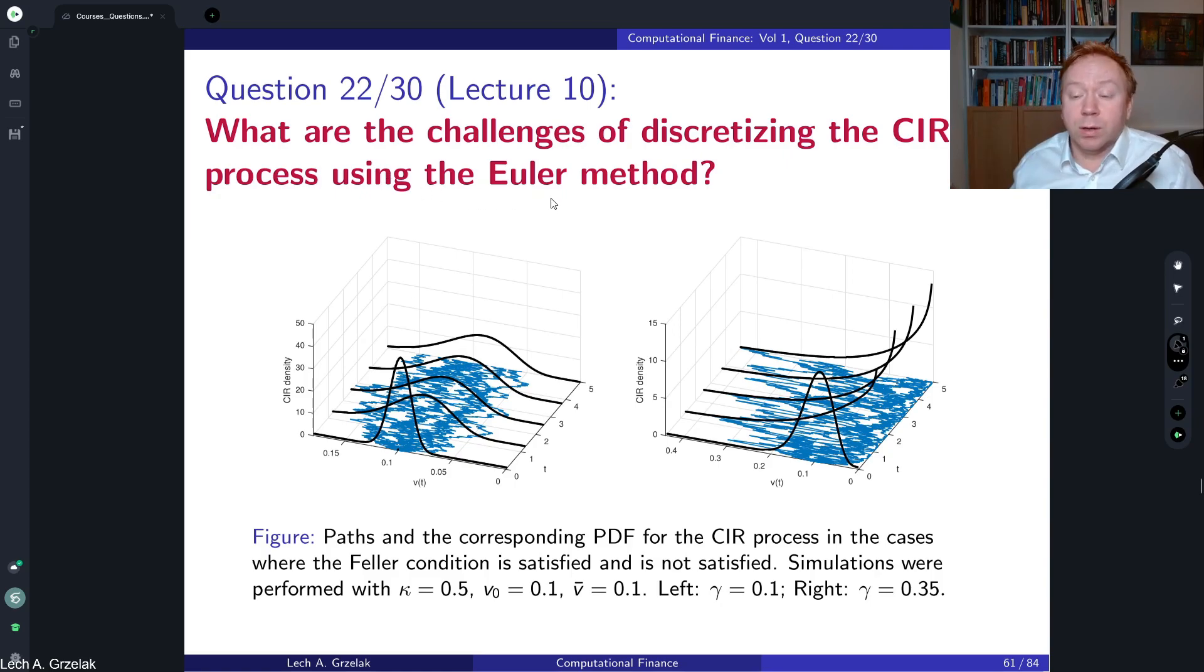For your information, in practice once you calibrate the Heston model, this is typically the case. The Feller condition is hardly ever satisfied. In literature you can see people apply the Heston model and they say we assume Feller condition to be satisfied and then they have some nice theoretical results, but as long as they don't touch real market data that works. In the case if you want to calibrate your model you will notice that the Feller condition for the Heston model is not satisfied.